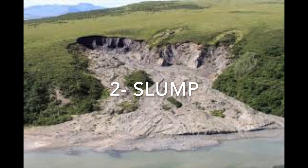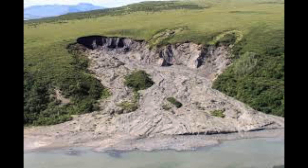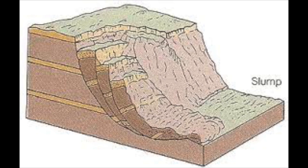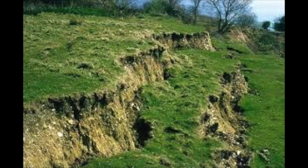The second type of mass movement is called slump. The motion of soil during slump leaves very distinct features on the landscape.